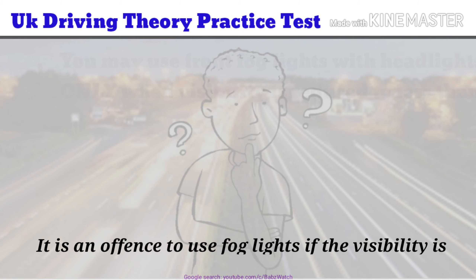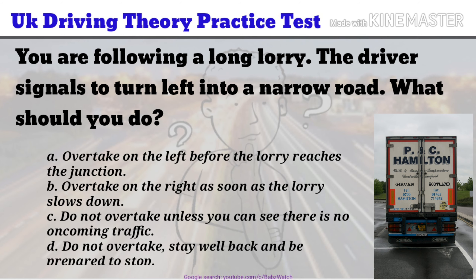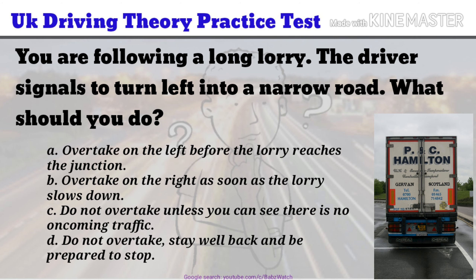UK Driving Theory Practice Test Question 12 of 50. You are following a long lorry. The driver signals to turn left into a narrow road. What should you do? a. Overtake on the left before the lorry reaches the junction. b. Overtake on the right as soon as the lorry slows down. c. Do not overtake unless you can see there is no oncoming traffic. d. Do not overtake — stay well back and be prepared to stop. The correct answer is d.